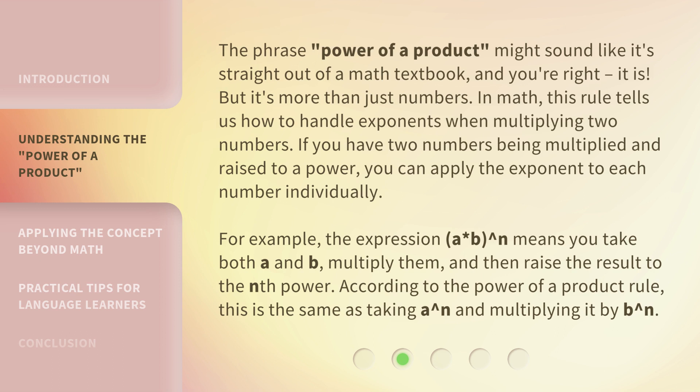For example, the expression (a·b)^n means you take both a and b, multiply them, and then raise the result to the nth power. According to the power of a product rule, this is the same as taking a^n and multiplying it by b^n.